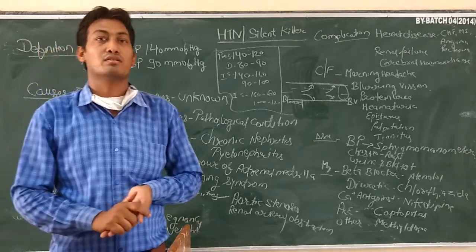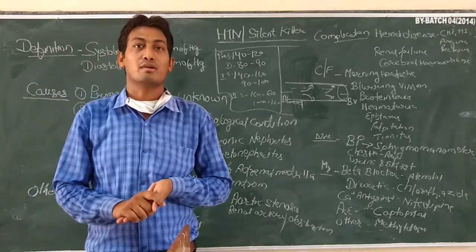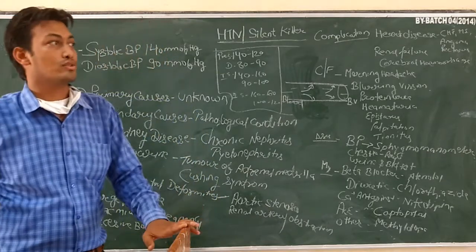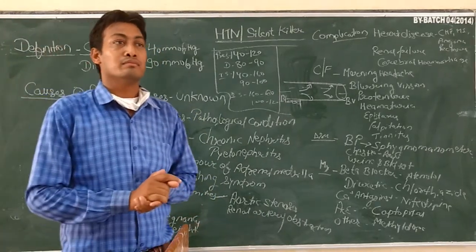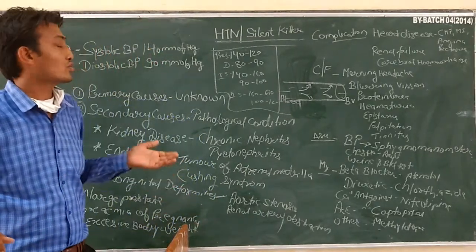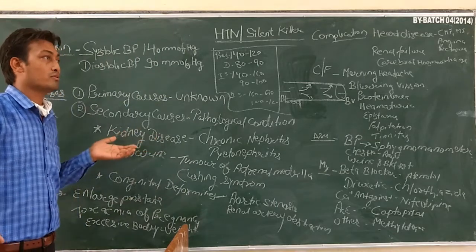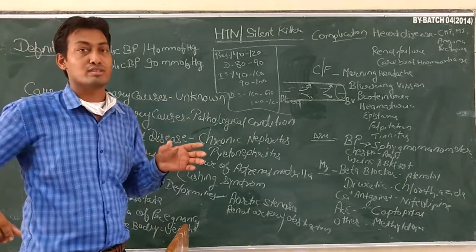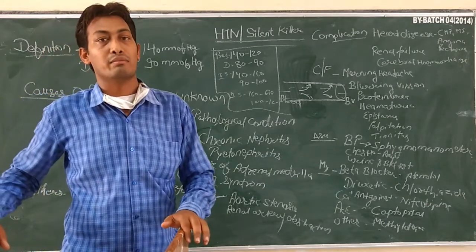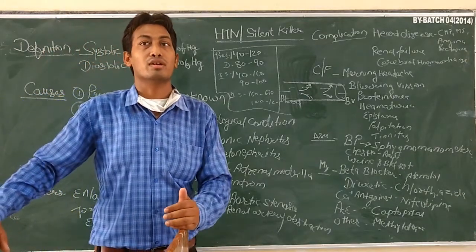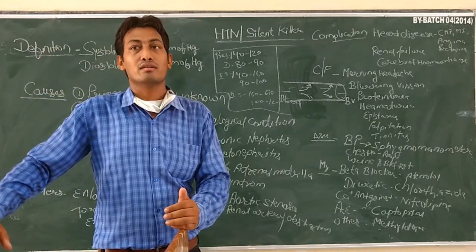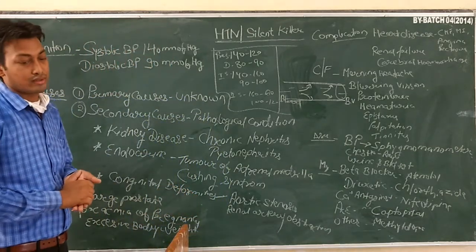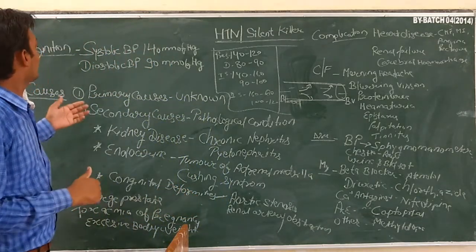Good morning students. Today we discuss about hypertension. Hypertension is a silent area. Hypertension is defined by a systolic blood pressure of 140 mmHg and a diastolic blood pressure of 120 mmHg.